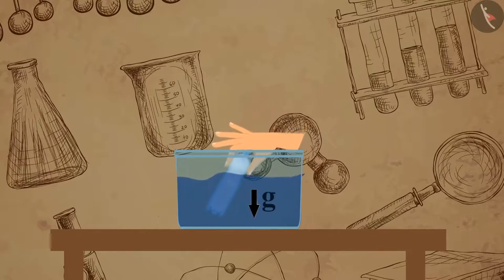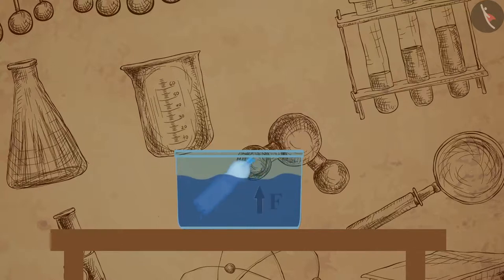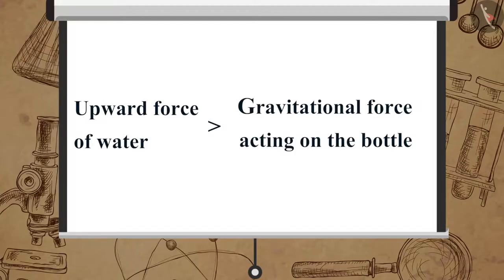Gravitational force is acting on the bottle in the downward direction, and the water exerts an upward force on the bottle. As a result, the bottle keeps floating. Therefore, we can conclude that the upward force of water is more than the gravitational force acting on the bottle.